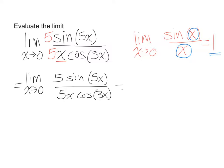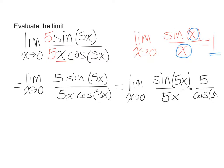And to do that, I'm just going to simply move things around to look like this: sine of 5x over 5x, and in the next fraction, I will have 5 over cosine 3x.